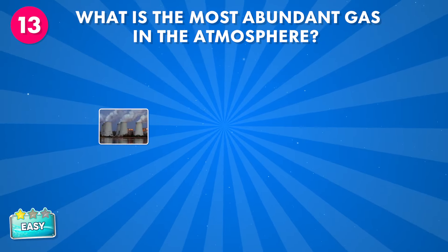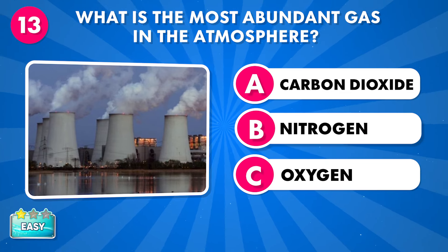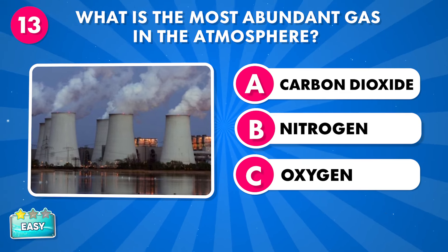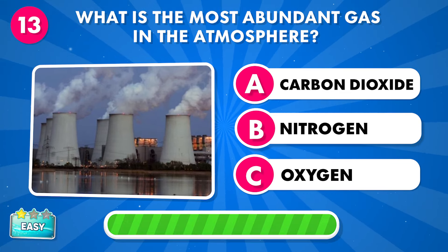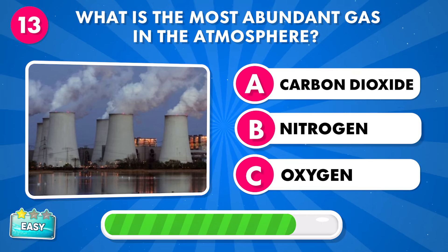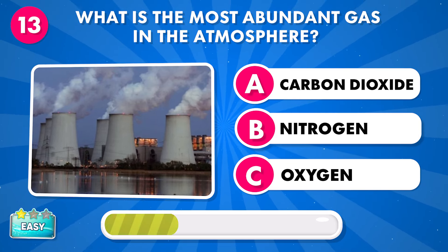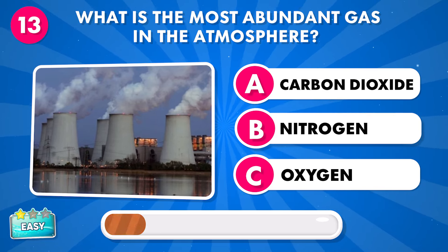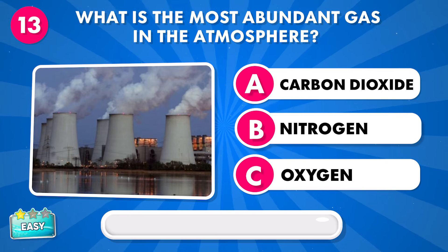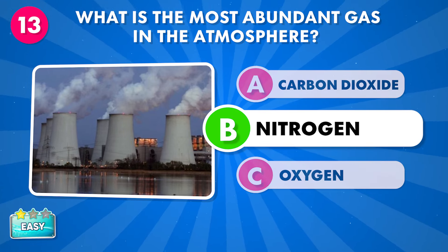What is the most abundant gas in the atmosphere? A: carbon dioxide, B: nitrogen, C: oxygen. It's nitrogen.